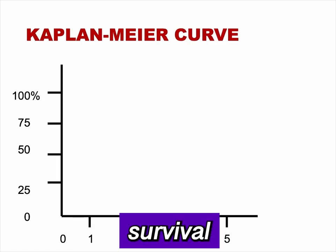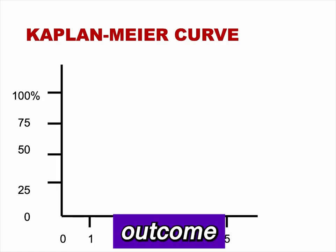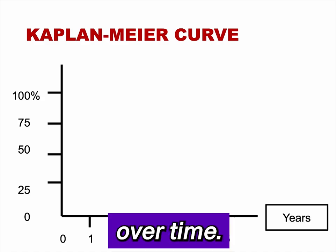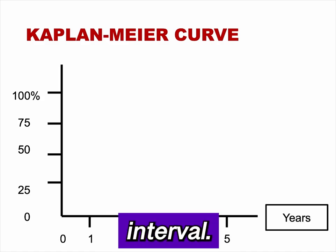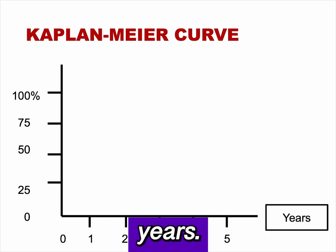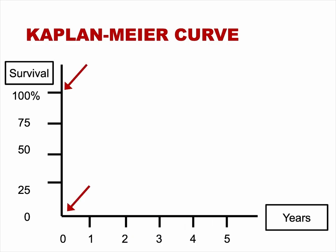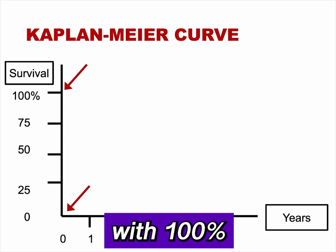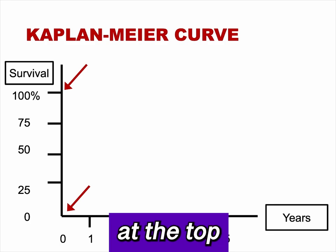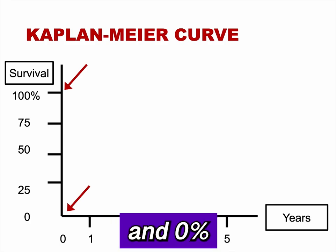Kaplan-Meier survival curves graph outcome events over time. The x-axis represents the time interval — in this example, years. The y-axis represents the percent survival, with 100% at the top and 0% at the bottom.